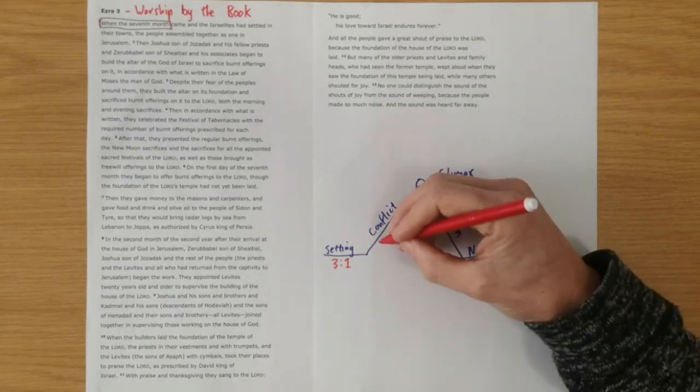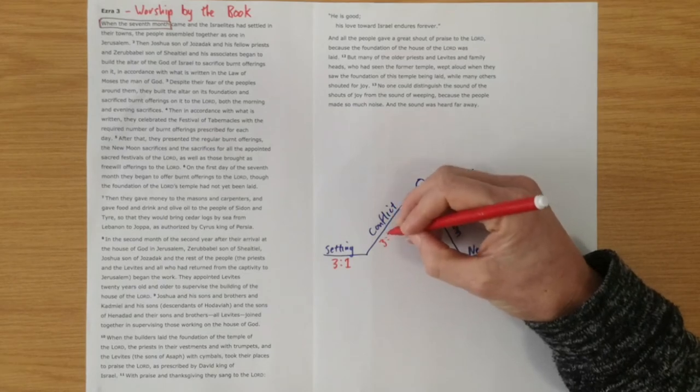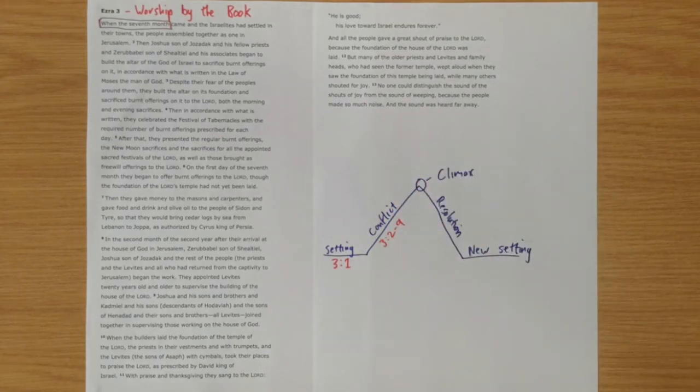Then the conflict is seen in chapter 3 verse 2 to verse 9 as this united community seek to re-establish right worship of God at the temple with both sacrifice and, as we'll see, song.